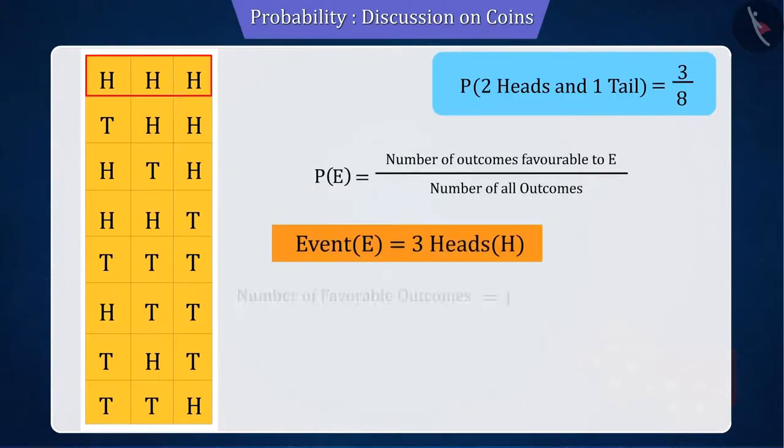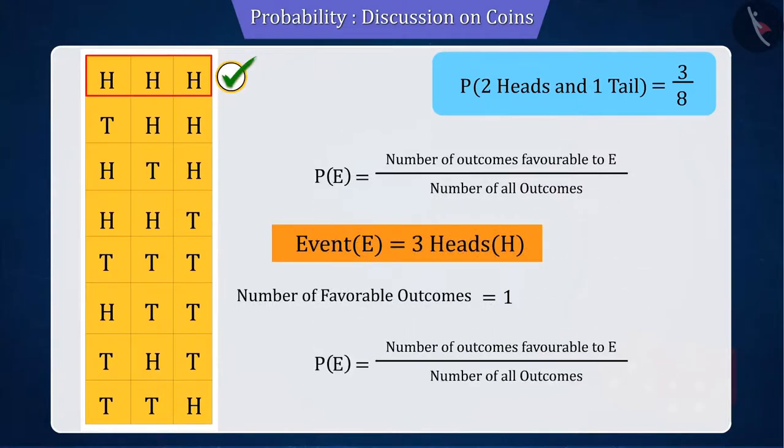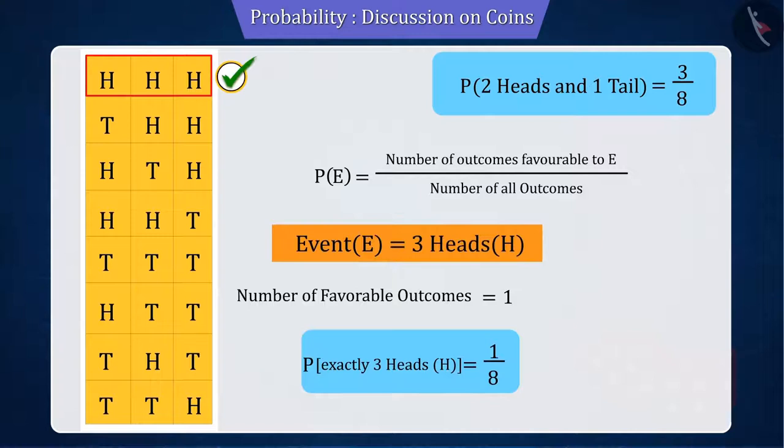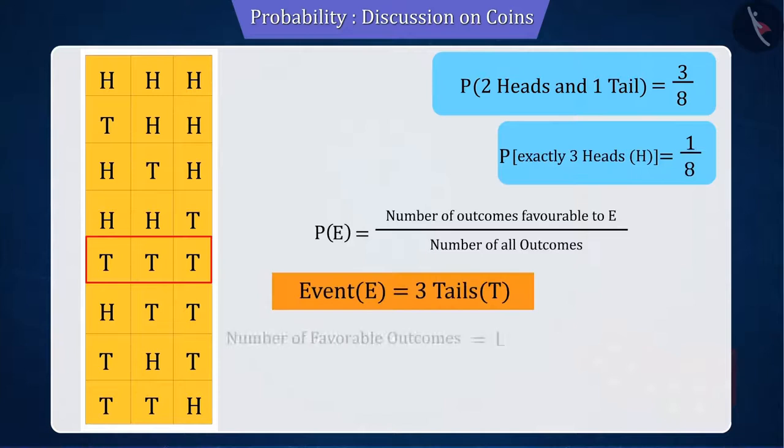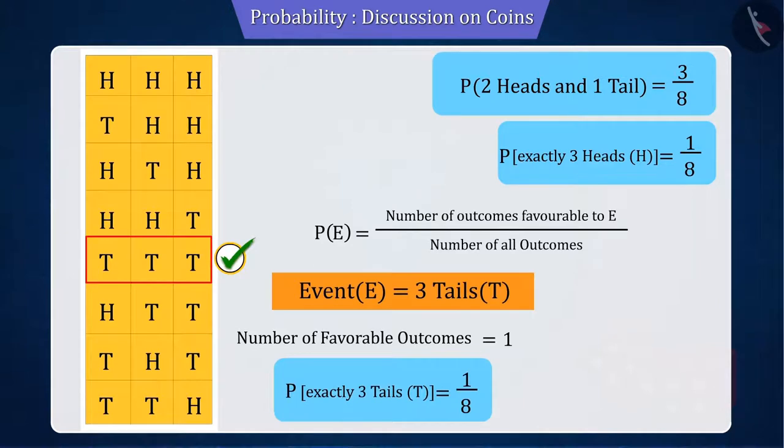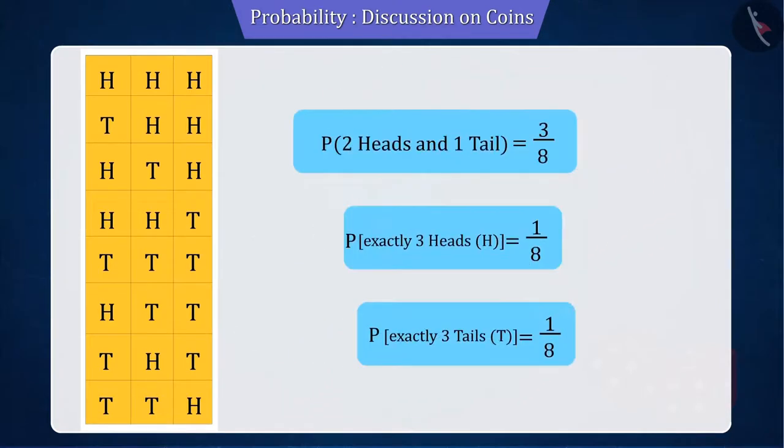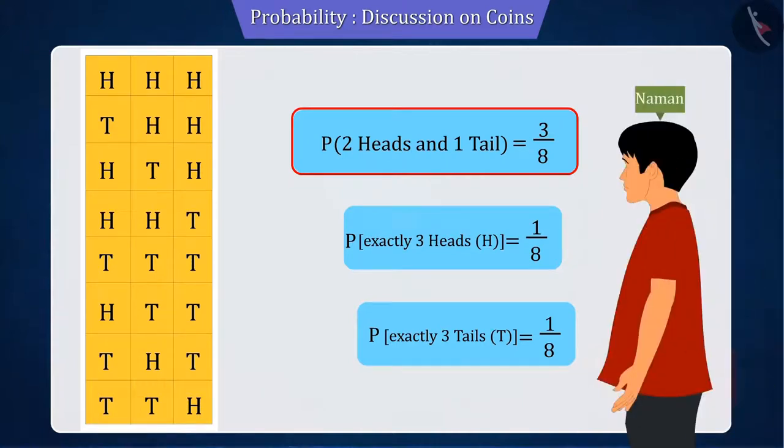While the total number of outcomes of three heads coming together is only 1, its probability will be 1 by 8. And similarly, the number of outcomes of three tails coming together is only 1, where the probability will be 1 by 8. According to which we can say that the maximum probability here will be of exactly two heads and one tail. According to which Naman has maximum chances of starting the game.